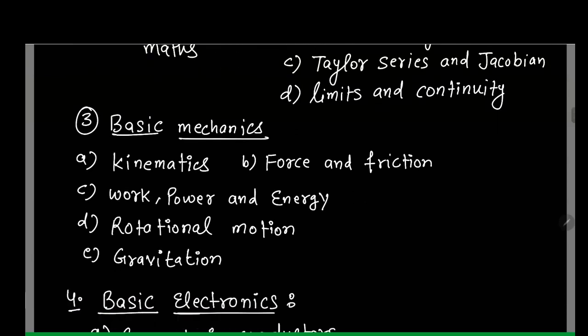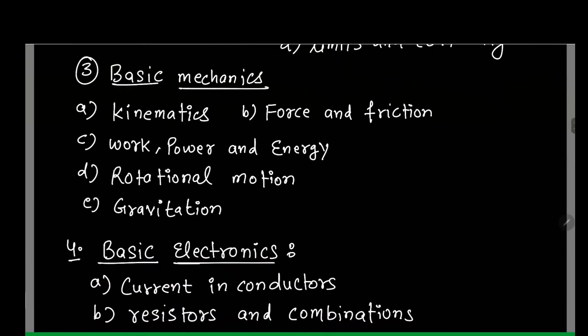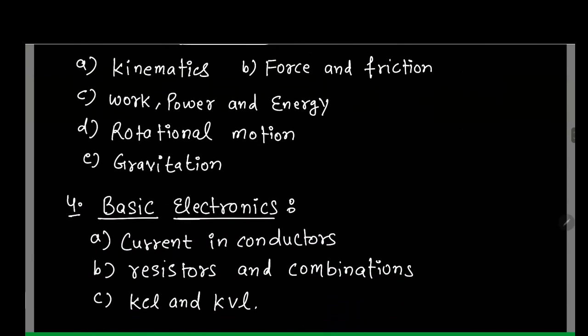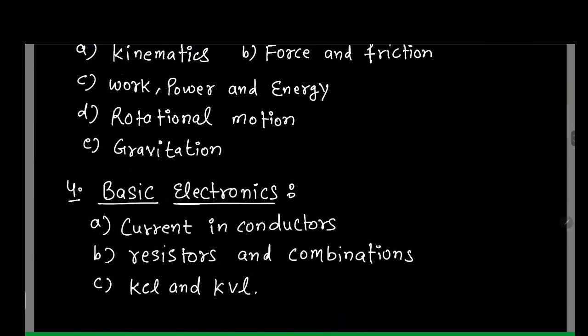After basic mechanics, the last segment — segment four — is basic electronics. In basic electronics, I will be covering current in a conductor, which involves formulas like mobility, drift velocity, mean free path, and relaxation time. You must have heard these terms in class 11th and 12th. This gives you a very good picture of how current flows inside a conductor.